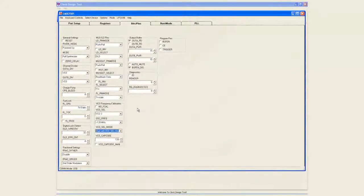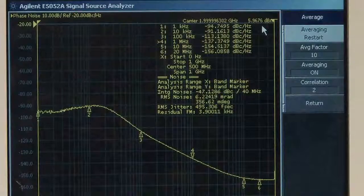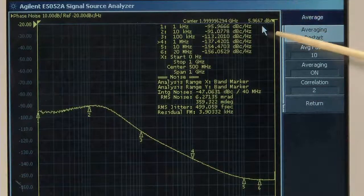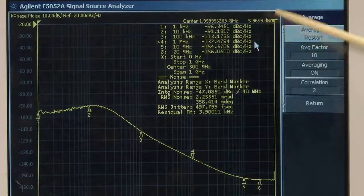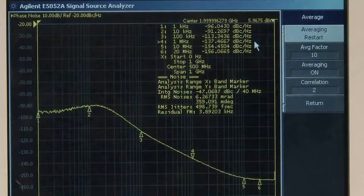So looking at the high performance VCO, if we look over here at our phase noise analyzer, just for example, we're doing better than 137 dBc per hertz at 1 MHz offset.